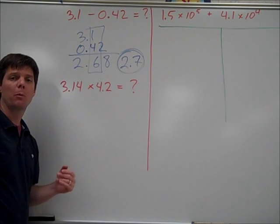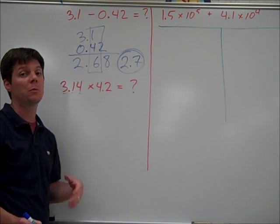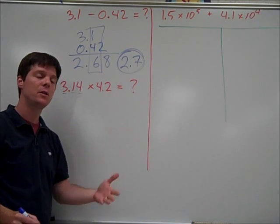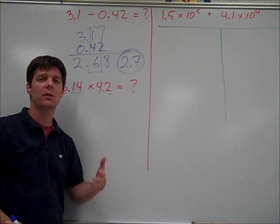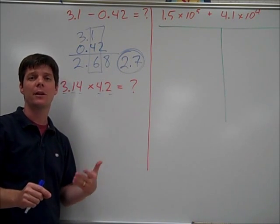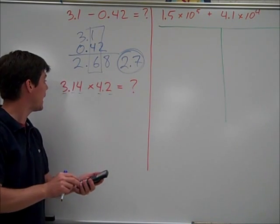I can see that the number 3.14 has three sig figs, one, two, three sig figs, because they're all non-zero digits. And the number 4.2 that I'm multiplying this by has two sig figs, one, two. So when I use my calculator to find this answer, I'll find whatever that result is and then I'm going to round it off to two significant digits. So let's go ahead and use the calculator to find that answer.